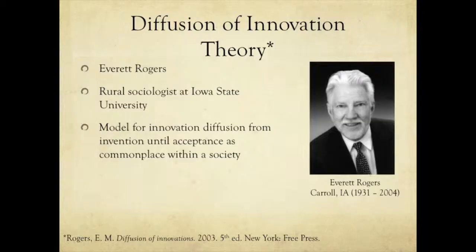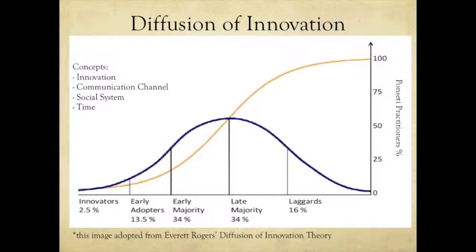The whole point of this talk is to understand why that happened. The best way to do that is to utilize Evert Rogers' Diffusion of Innovation Theory. Rogers was a sociologist at Iowa State University — he's actually from Carroll, Iowa. He described a model for innovation diffusion that talks about any invention from the point it's invented until everybody in society uses it. I like to use this bell curve graph that he developed, superimposed with Ponseti.